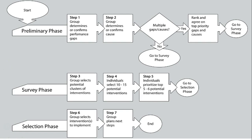There are three main phases you'll go through with the intervention selection process: the preliminary stage, the survey stage, and the selection stage. The preliminary phase sets the stage for selecting interventions. Intervention selection depends on reliable performance and cause analysis — it is essential to have agreement on what the problems are and what causes them. Analysis data are powerful resources for decision making, which is why it's important to use data to back up your thoughts rather than just going with a gut feeling, but basing decisions on concrete evidence.